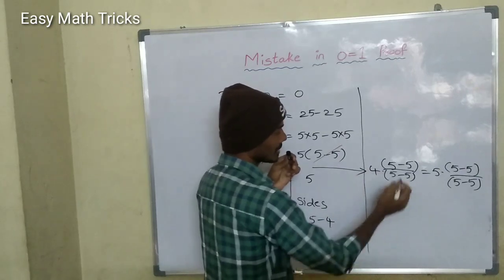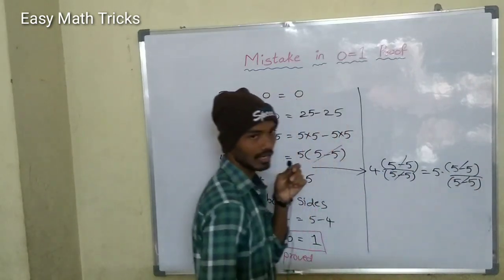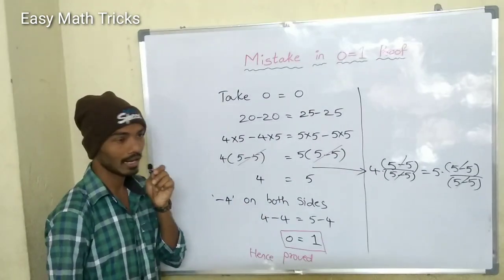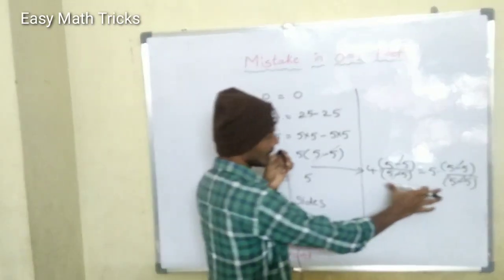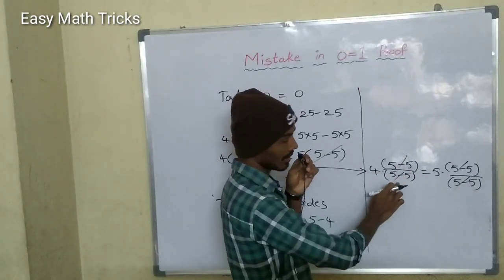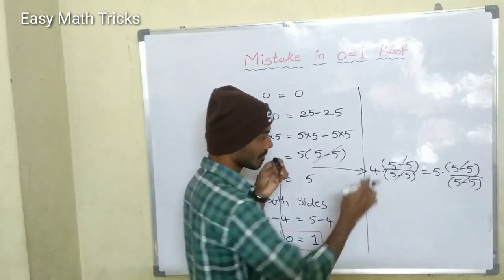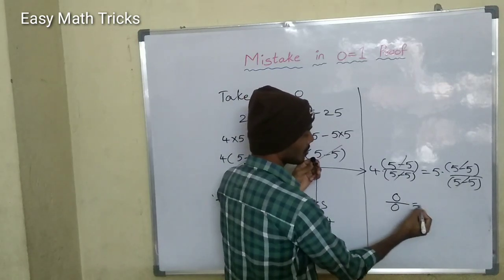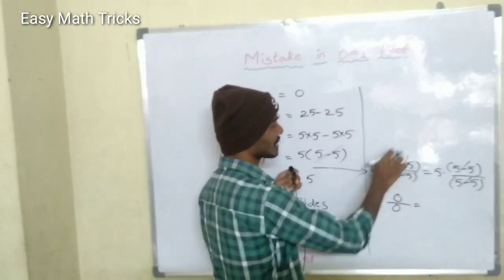We divide each side. Cancel. Now 4 is equal to 5. But here in this step, we have 5 minus 5 by 5 minus 5. This is not valid. 5 minus 5 by 5 minus 5 — 5 minus 5 is equal to 0. Divide by 0. If we cancel 0 by 0, we will cancel — but if we cancel one again, we will cancel.